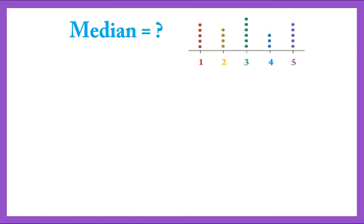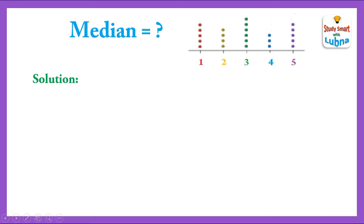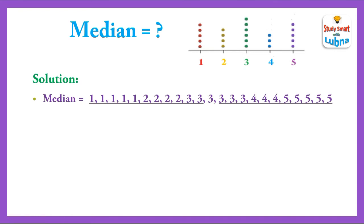Now, how to find the median using the Dot Plot? First, we will write all the dots with their numbers: number 1 five times, 2 four times, 3 six times, 4 three times, and 5 five times. Then we find the middle value. In median we find the middle value, and here the middle value is 3. So our median according to the Dot Plot is 3.